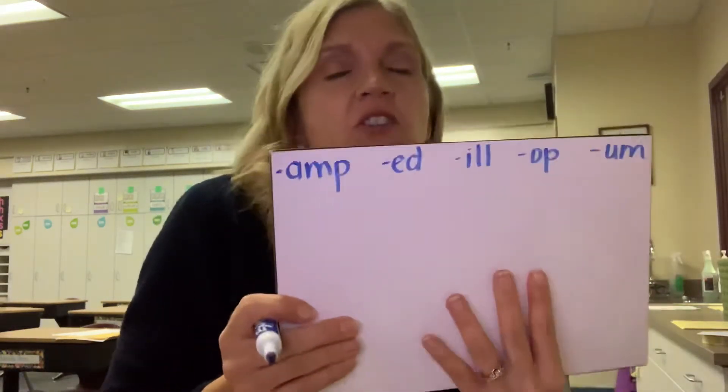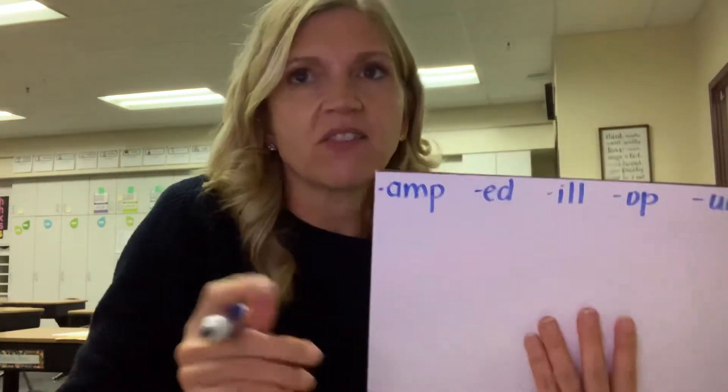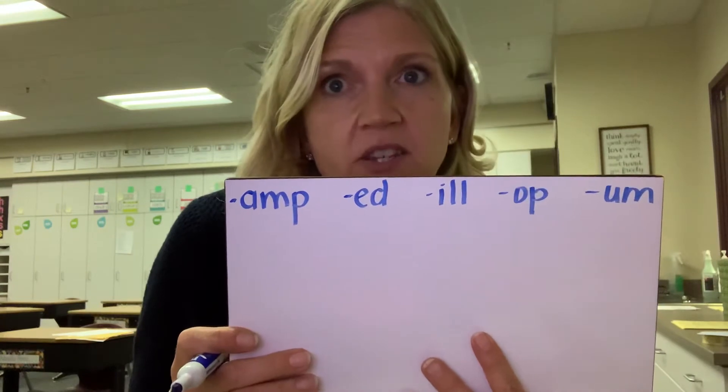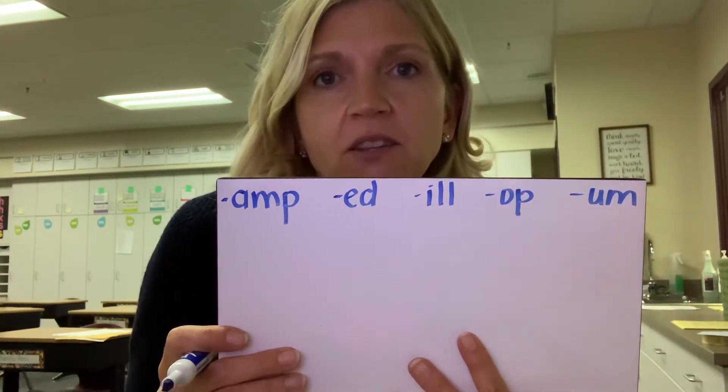And you're going to need to put five sections on your slate. You'll see that I have A-M-P, E-D, I-L-L, O-P, and U-M up at the top of this video. So you're going to do that on your slate. Take a minute, pause me, to make your slate look like mine.